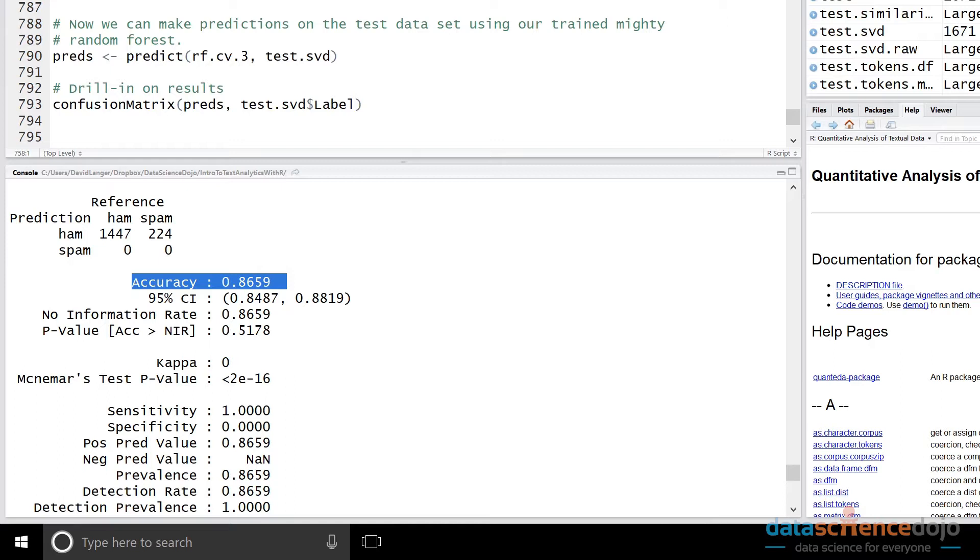And we had a hypothesis early on that this might happen because we engineered a feature in our training data, which essentially said for each individual text message in the training set, what was its average cosine similarity to all of the spam messages in the training set? And we saw that that was actually a pretty good feature. It actually gave us a lot of predictive power in our cross-validation runs.